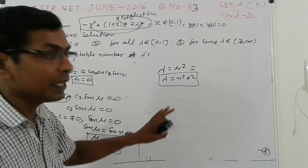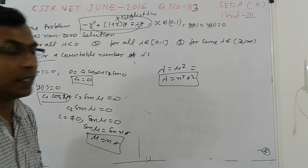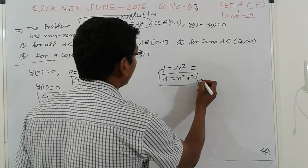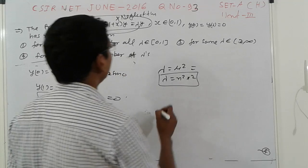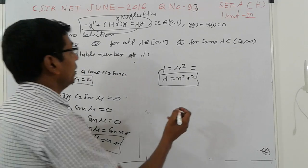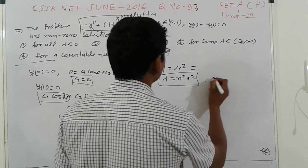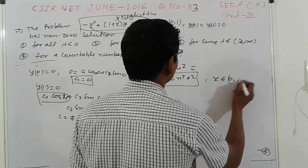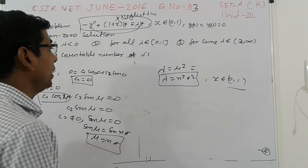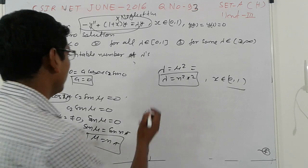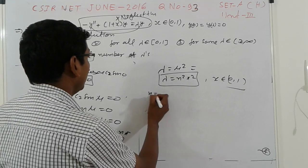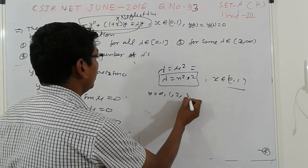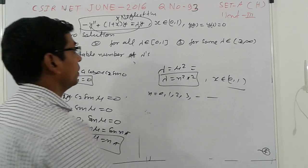So the eigenvalues are λ = n²π², where x belongs to [0,1] and n = 1, 2, 3, and so on.